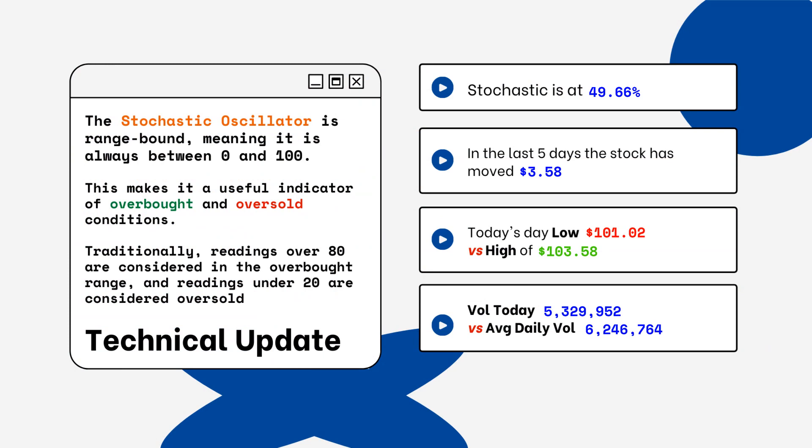Readings over 80% are considered overbought, and readings below 20% are considered oversold. You want to be aware of this when you're looking at a particular stock.